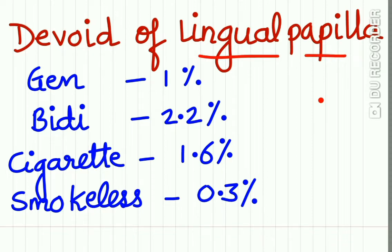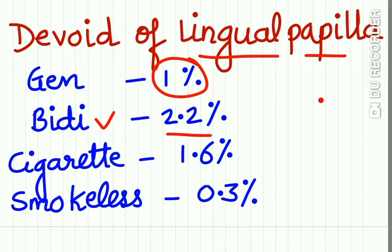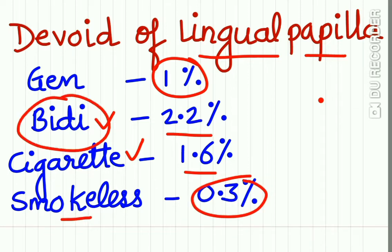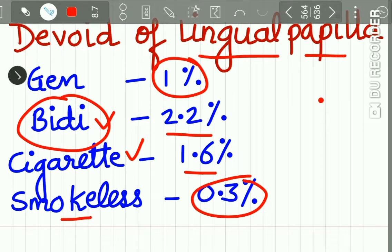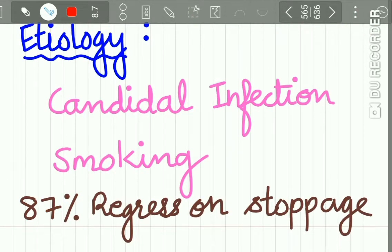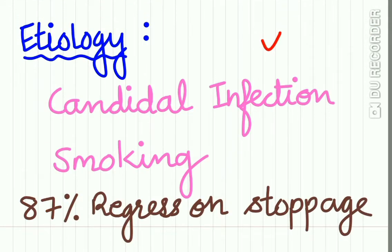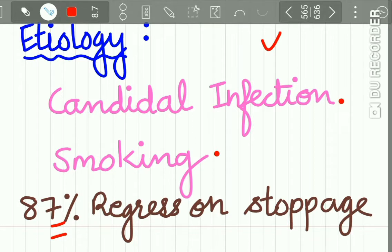The general population shows a 1% incidence of central papillary atrophy of the tongue. In bidi smokers, this incidence increases up to 2.2%. In cigarette smokers, it is 1.6%, while those using smokeless tobacco, it is 0.3%. So bidi smoking is one of the risk factors. The etiology may be candidal infection and bidi smoking. In 87% of cases, the lesion regresses on stoppage of the habit.